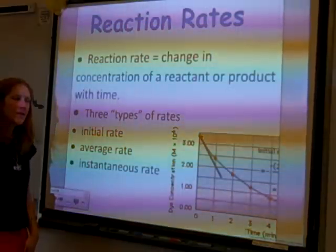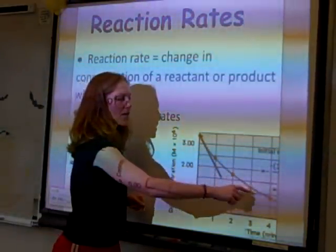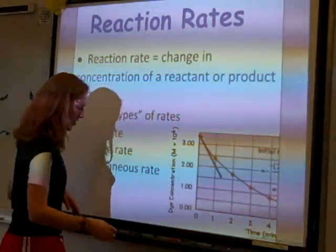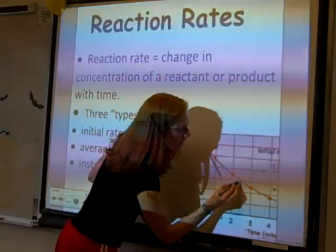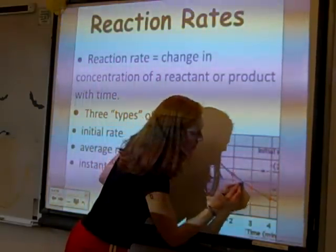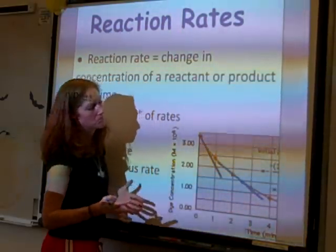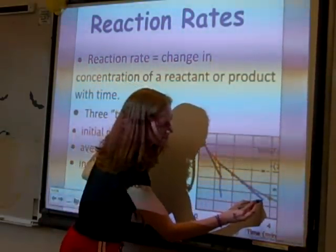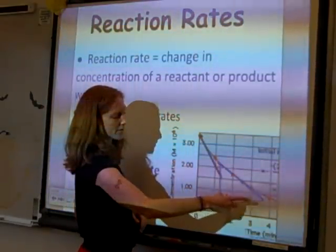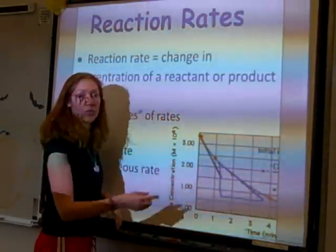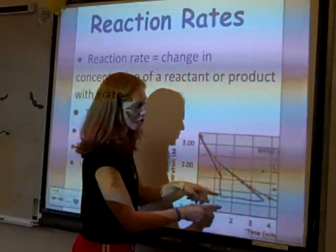The instantaneous rate is the rate at any given moment. Once you've plotted concentration versus time and drawn the curve, you pick any point in time and draw a tangent line — a line that touches the curve at just that one point. Then you find the slope of that tangent line: change in y over change in x, rise over run. That slope tells you how much the concentration is changing per unit of time at that instant.